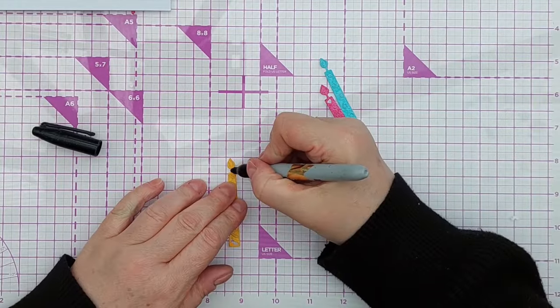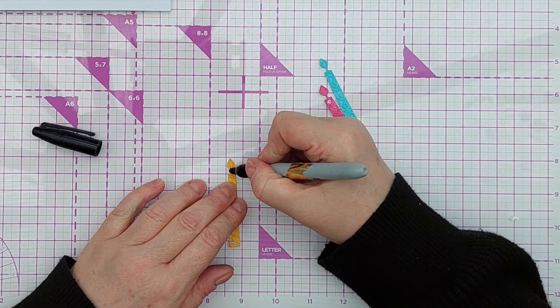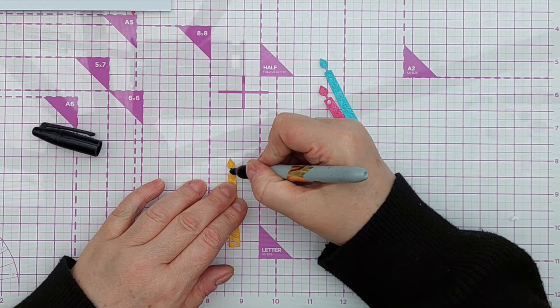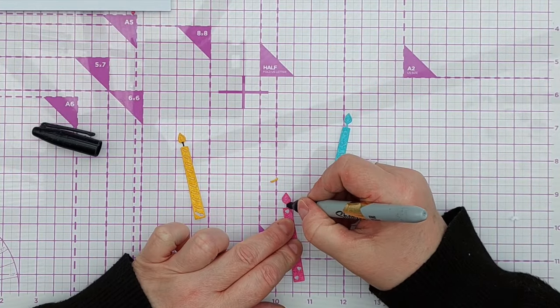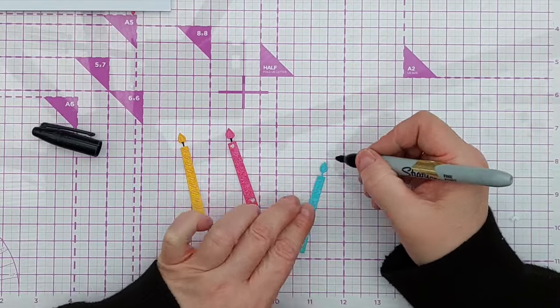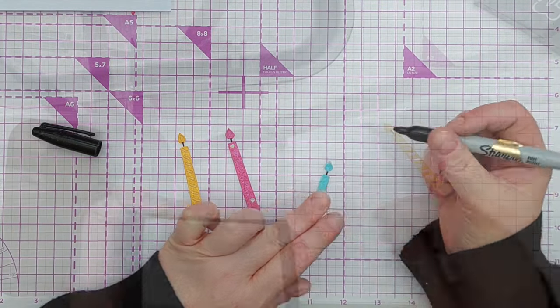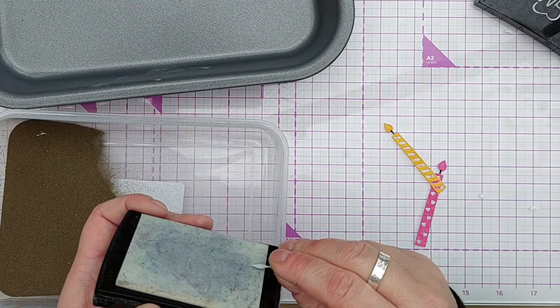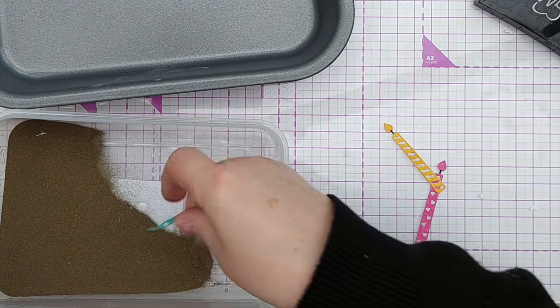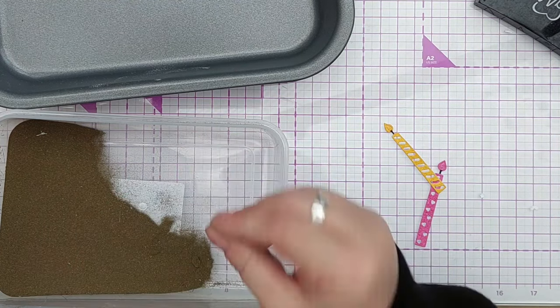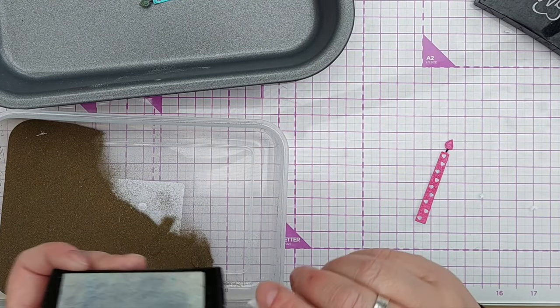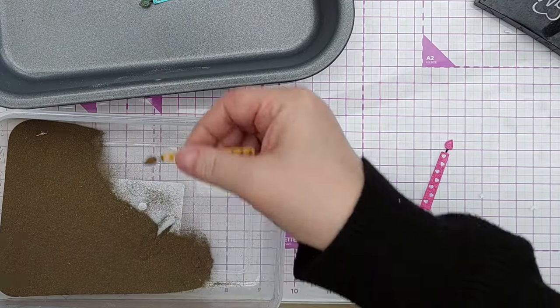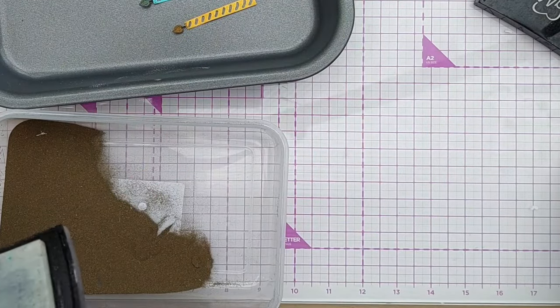I then colored the wick with a black pen, and then I heat embossed the flames with some gold embossing powder. All I did was press the flame down onto my embossing ink pad, dip it in gold embossing powder, and then brush off any stray bits of powder before heating it to melt the embossing powder and bring out that lovely gold.